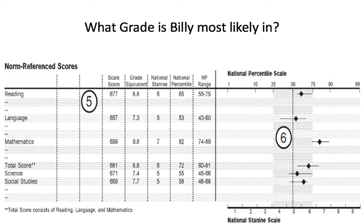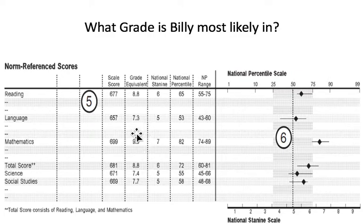Another question I will ask is: what grade is Billy most likely in? The question is how do you figure this out. It has to do with the relationship between the national percentile score and the grade equivalent. Grade equivalent scores are generated based on the median score of people in your grade being equal to your current grade and month. For example, 7.3 means seventh grade, third month. When the test is given to seventh graders in the third month, the middle score — stacking all scores from lowest to highest and taking the one in the middle — will be the grade equivalent of where they are now.